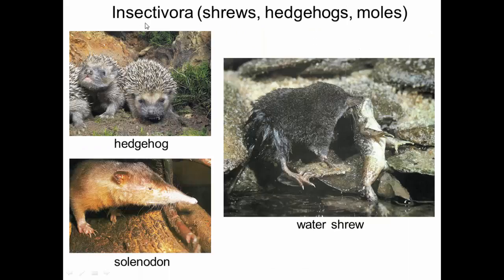Finally, insectivores include shrews, hedgehogs, and moles. They may look like rodents but they are a different order of mammals. Hedgehogs are very popular in England; solenodons are found in Madagascar; and this water shrew is shown catching prey. These animals have a very fast metabolism and must eat constantly to stay alive.